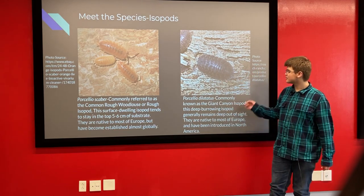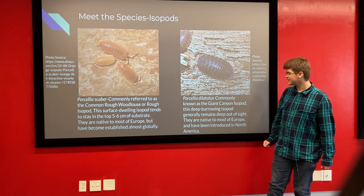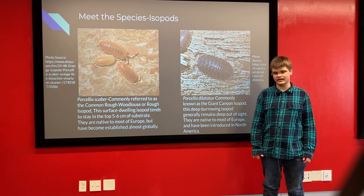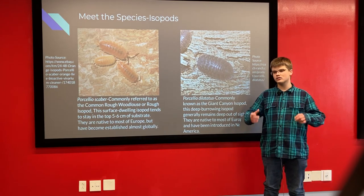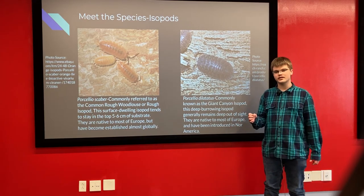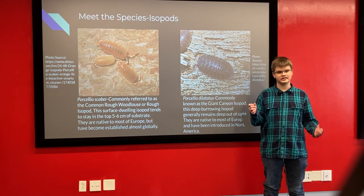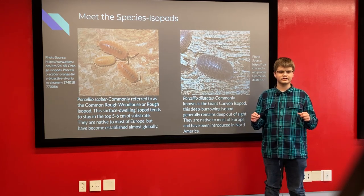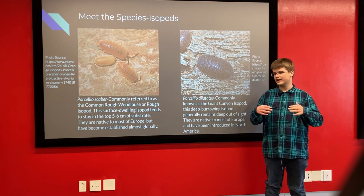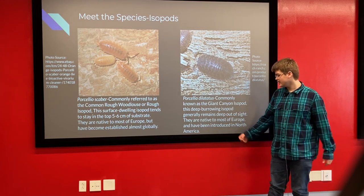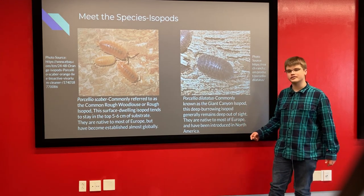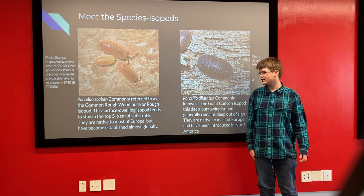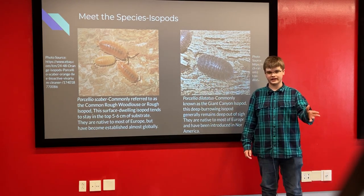Over here we have Porcelio dilatatus, commonly referred to as the giant canyon isopod. They are a little more localized within Europe, usually staying closer to the northwest, but they do dip down into Italy and have been introduced into North America, though not as widely as Porcelio scaber.